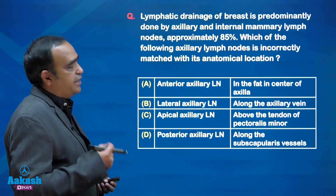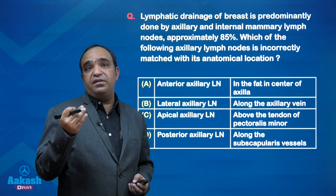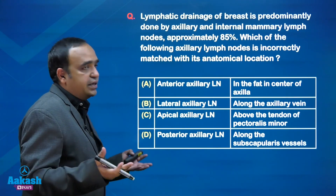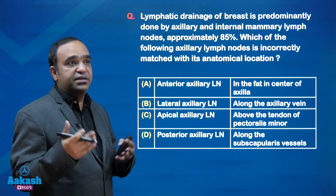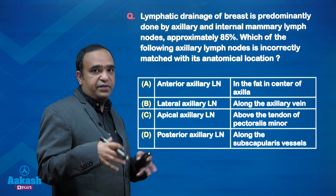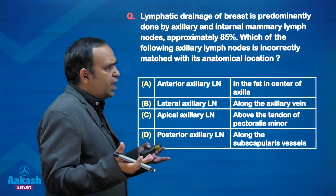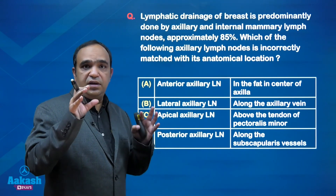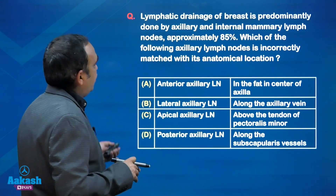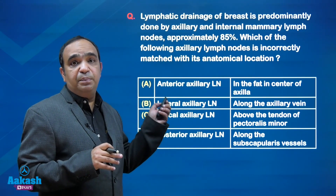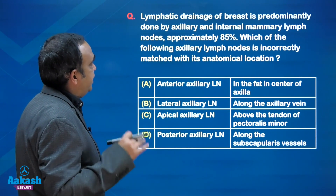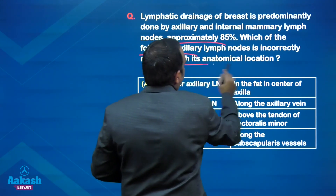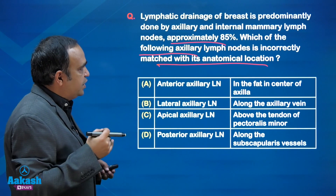The next question is lymphatic drainage of the breast. This time we had five to six questions from breast in the two papers of INICT. Topics keep changing but the focus remains the same. All the questions were marked as mandatory to know. Lymphatic drainage of breast is predominantly done by axillary and internal mammary lymph nodes. We have to match the axillary lymph nodes with their anatomical location - a question that can be put in anatomy and surgery as well.